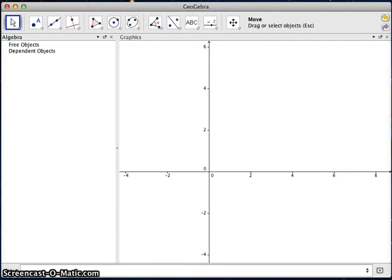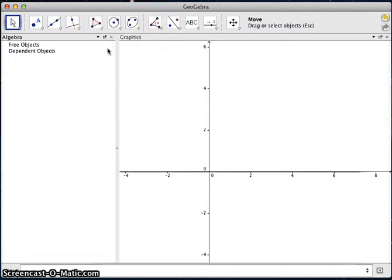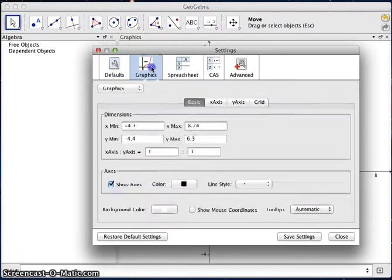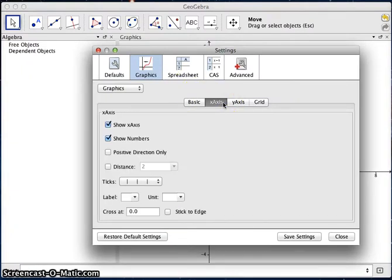In GeoGebra, if you go up to the Options menu at the top of the page, you'll see something called Settings. If you click over on the Graphics tab and then go to the x-axis, you'll see the units can be changed to pi.